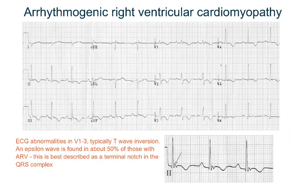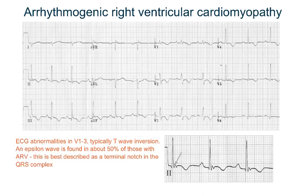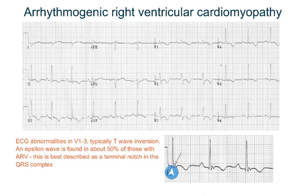This is an ECG of arrhythmogenic right ventricular cardiomyopathy. The criteria is that in leads V1, V2, and V3, you will see T wave inversions in all three leads — really evident in this ECG. The second finding is that in 50% of patients you will find an epsilon wave, which is a notch at the end of the QRS complex. Here is a zoomed-in picture showing the QRS and then a small notch before the T wave inversion.